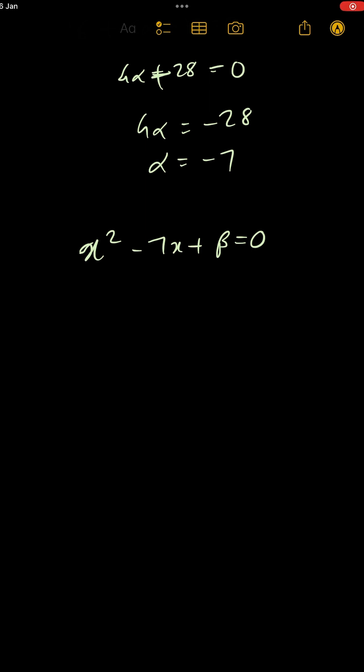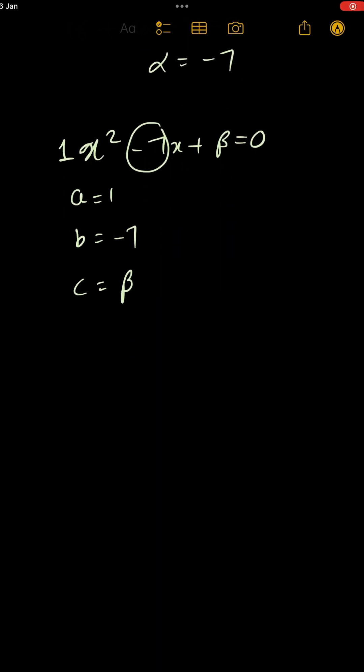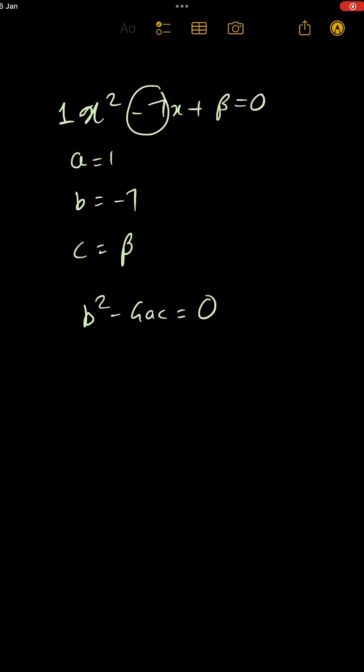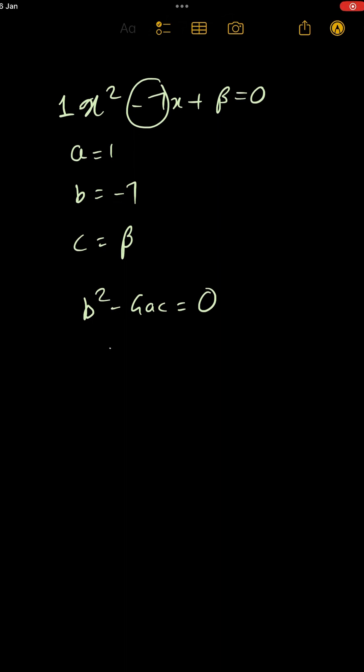If we bring it to standard form, a = 1 because this is 1x², b = -7 because this is -7x, and c = β. Now we know b² - 4ac = 0. b² is 7² = 49, minus 4 into a (which is 1) into c (which is β) equals 0.